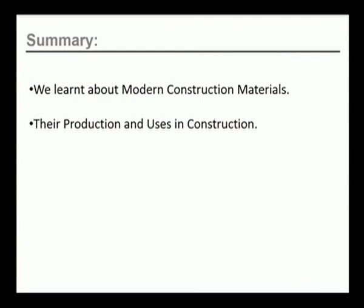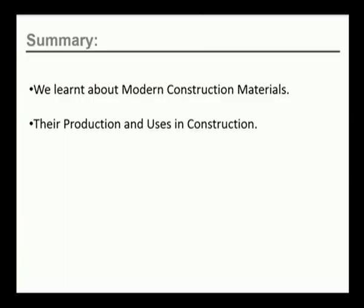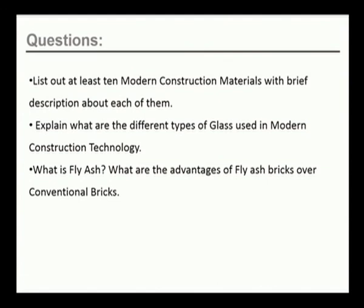In summary, we learned about modern construction materials including glass, metals, and composite boards. We also got an alternative to brick in the form of concrete masonry units with or without cavities, and AAC blocks. We learned how they are produced and their uses in construction. Questions for review: List at least 10 modern construction materials with a brief description of each. Explain the different types of glass used in modern construction technology. What is fly ash? What are the advantages of fly ash bricks over conventional bricks?